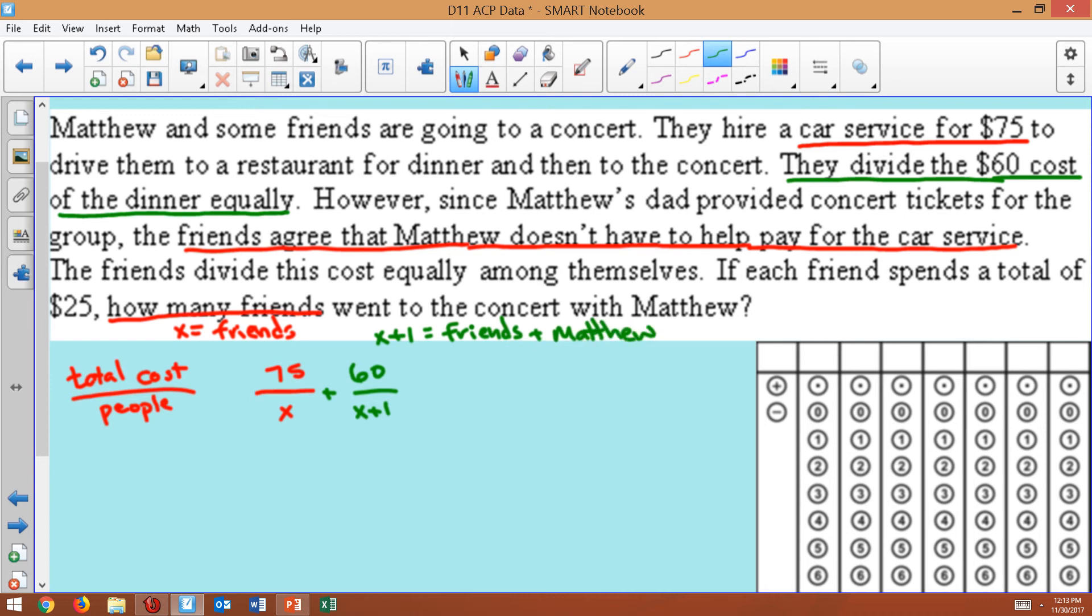We're told each friend spends a total of $25. And that's a total. So those two things added together would equal $25.